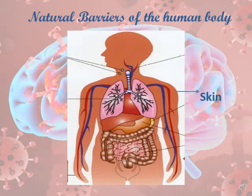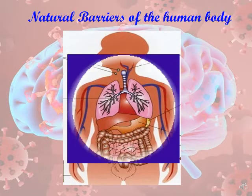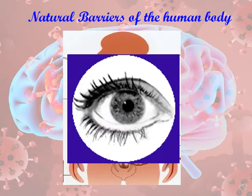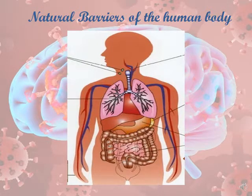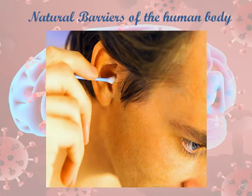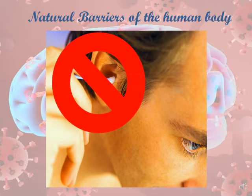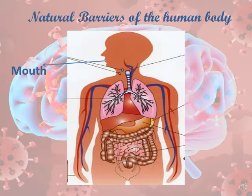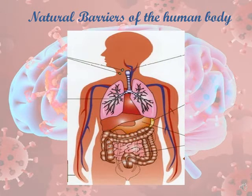Natural barriers of the human body: first we have the skin, which is the first line of defense. We also have the eyes — the tears are one of the natural barriers and help in the process of defense. The wax in the ears presents a line of defense. We also have defenses in the mouth, at the level of the stomach, and sweat — they all play an important role in defense.